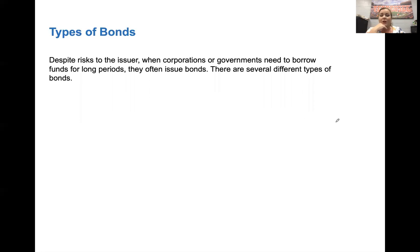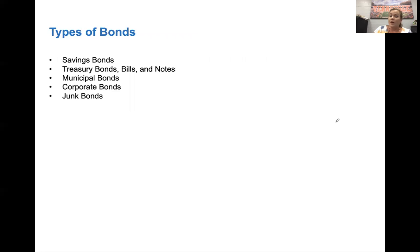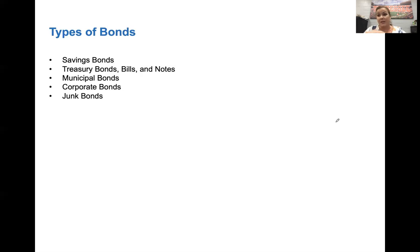There are several types of bonds. Savings bonds and treasury bonds, bills, and notes — those differ mainly by the length of time you can hold them. Municipal bonds are from state or local governments. Corporate bonds come from corporations. And junk bonds are high risk, high reward, but you can lose everything — they're nothing but junk.